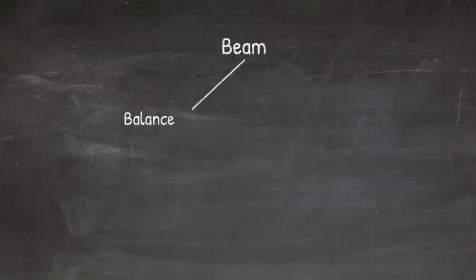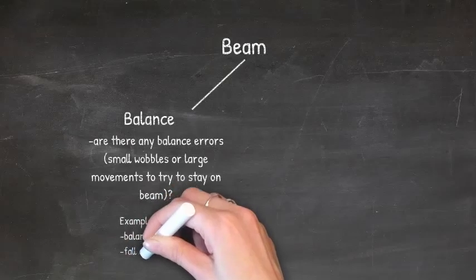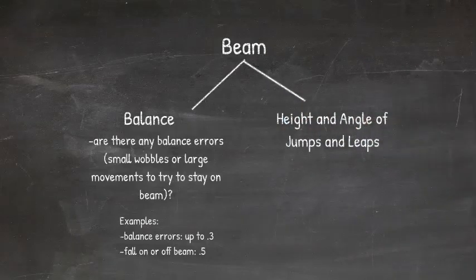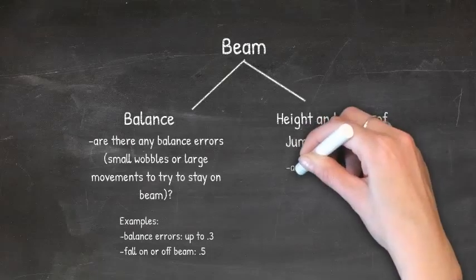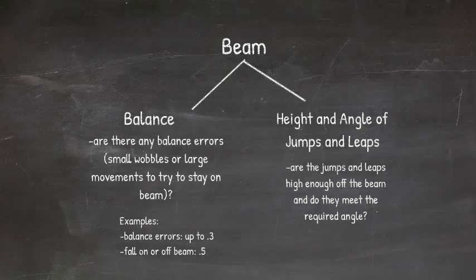For beam scoring, one of the most important things judges look for is balance. Balance errors can really add up in a routine — a small wobble or large balancing movements can each receive a deduction of up to three tenths, and a fall on or off the beam is a five-tenths deduction. The other key area is the height and angle of jumps and leaps. Every jump and leap is evaluated for height off the beam as well as the angle achieved in a split leap or split jump — gymnasts often don't realize they're not meeting the angle requirement.